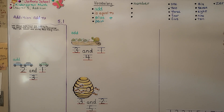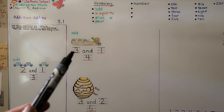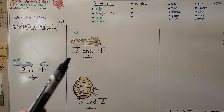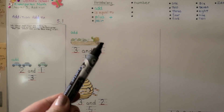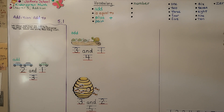So remember, the word 'and' tells us to add. When one group is put together with another group, the two groups are added together. The first number is how many at first, the next number is how many more, and the last number is how many together. Our next lesson, 5.2, we're going to learn more about addition and putting numbers together. I hope you'll join me and I hope you have a great day. Bye.